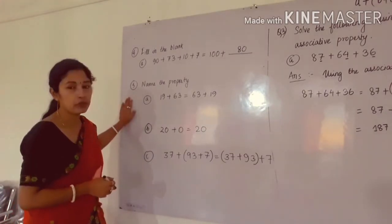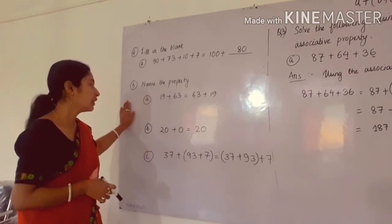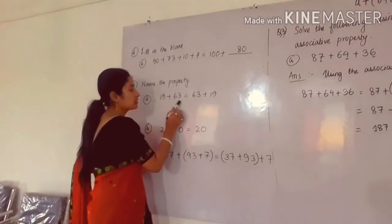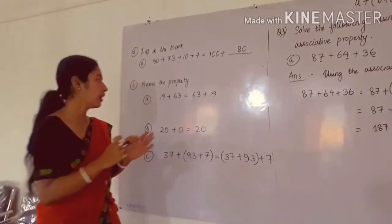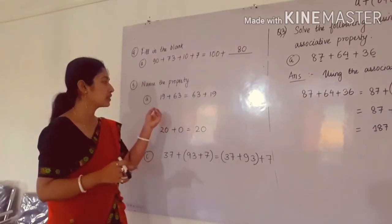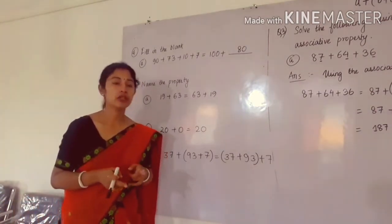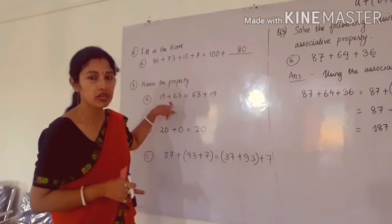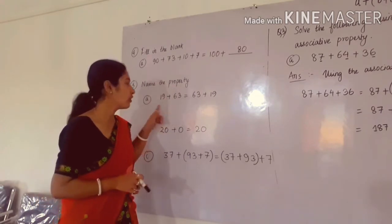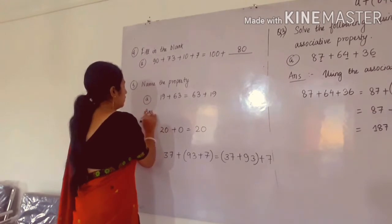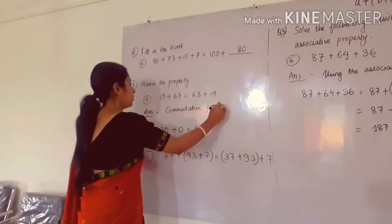Next, come to question number 5. You have to name the property — no need to do any calculation. In number A, we have 19 plus 63 equal to 63 plus 19. In left hand side and right hand side, the order is changed: 63 has moved to the first position and 19 to the second, with a plus symbol between both numbers. This is the commutative property of addition in whole numbers — you have to write that as your answer.